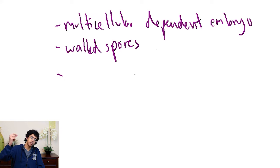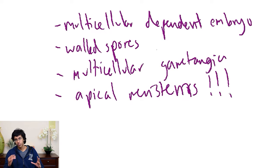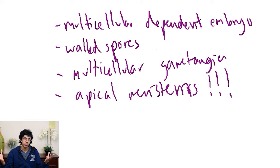Now, back to the story of how plants are different from their carophyte ancestors. These are not necessarily as important, but it's good to know. The first one is multicellular dependent embryo. Then there are walled spores because they have sporopollenin. They have multicellular gametangia, which are the things that produce gametes. And lastly, apical meristem, which are important - basically the things on the tip of your shoot that cause the plant to grow. Apical means the tip, and meristem means something that grows.